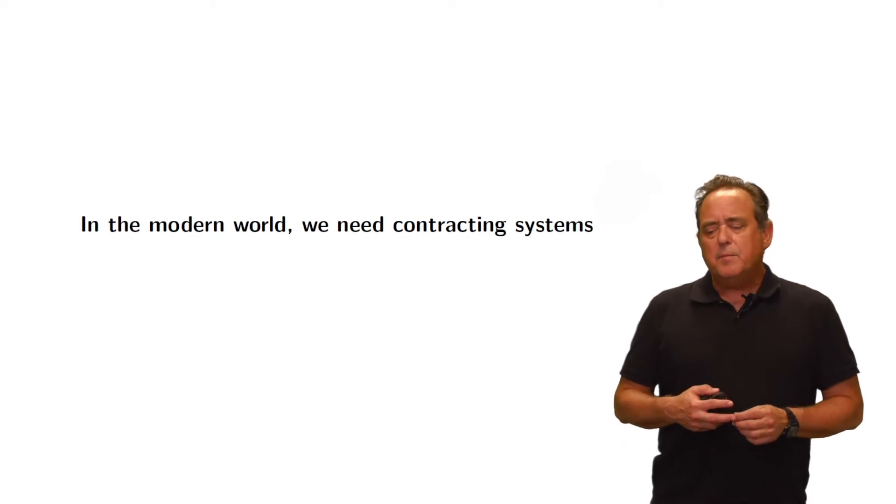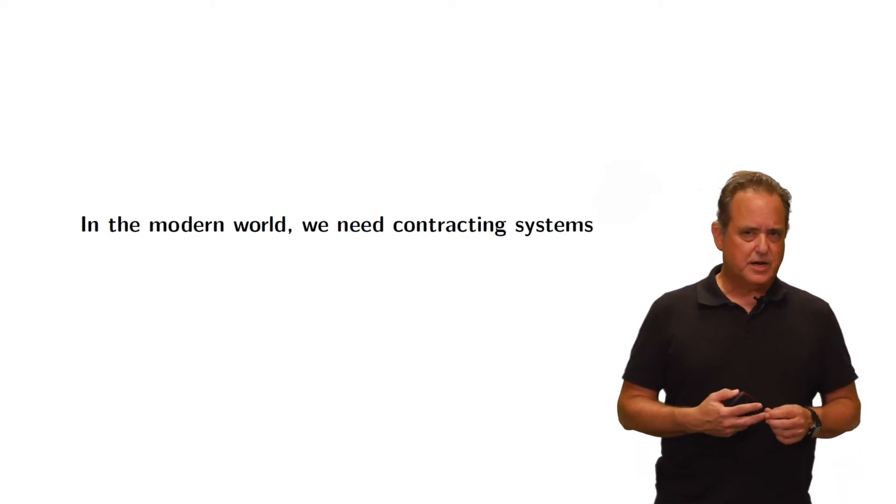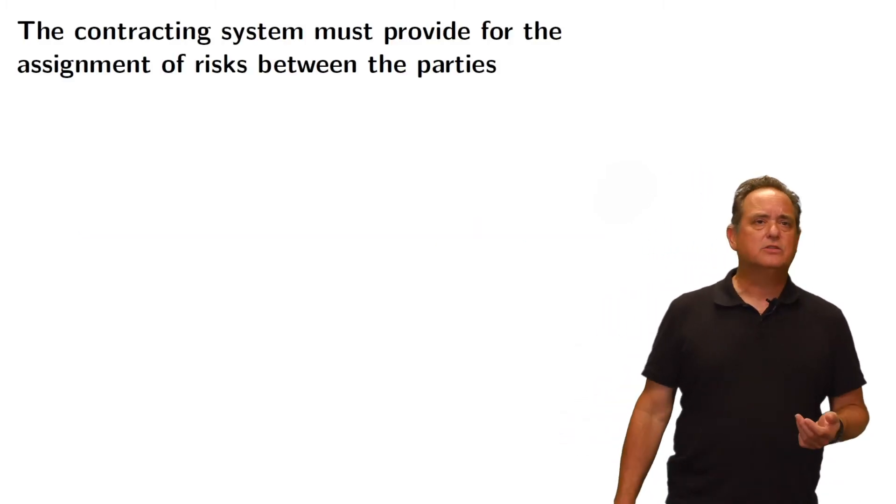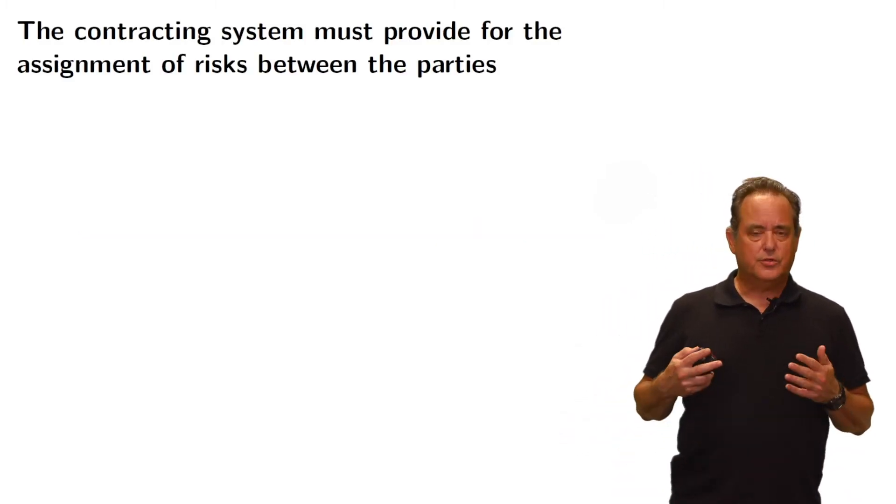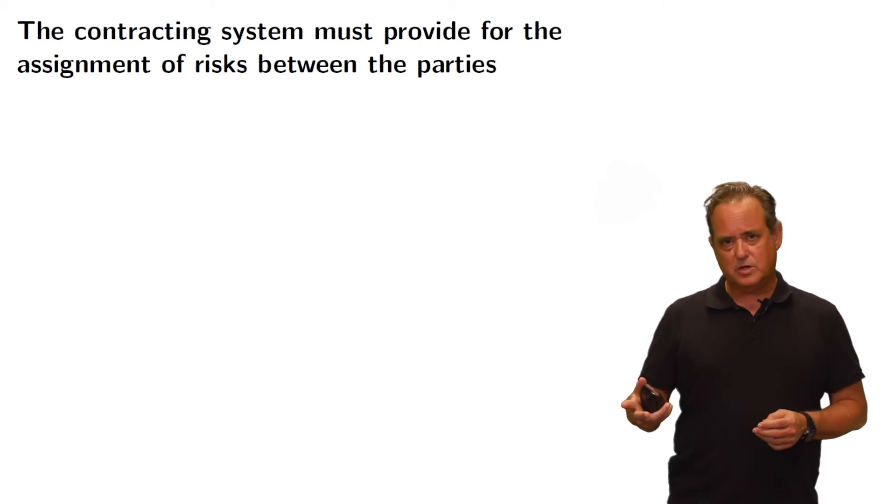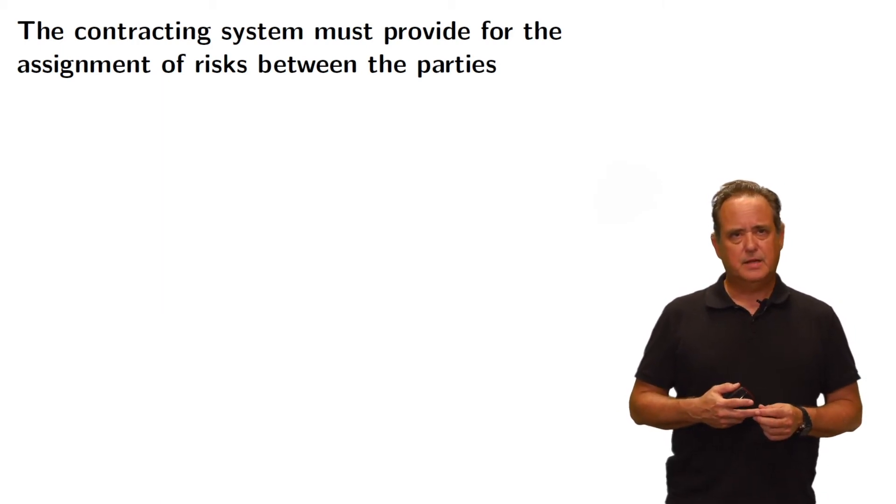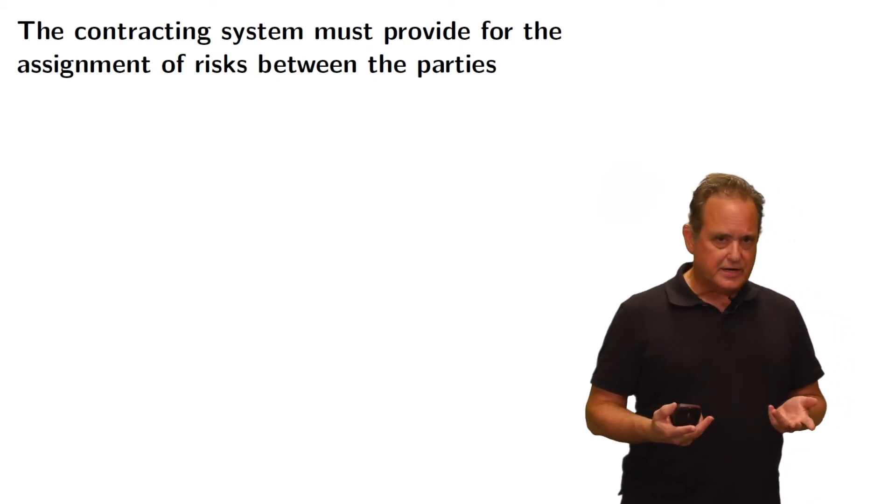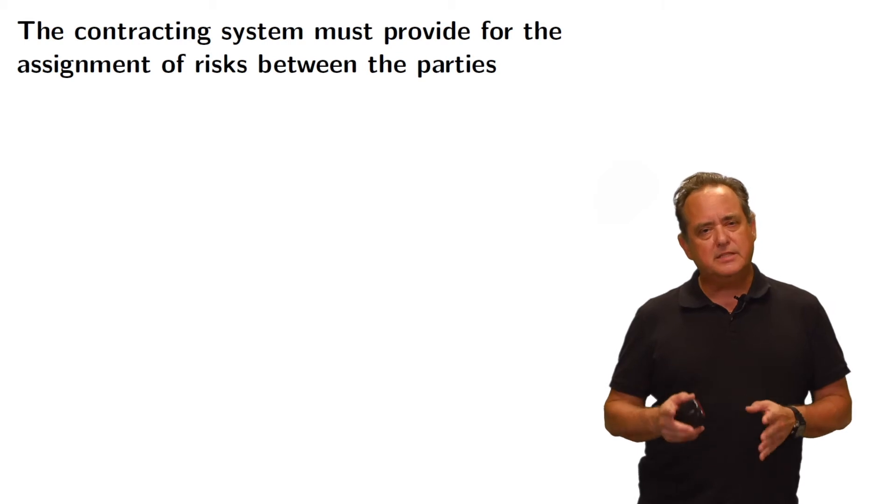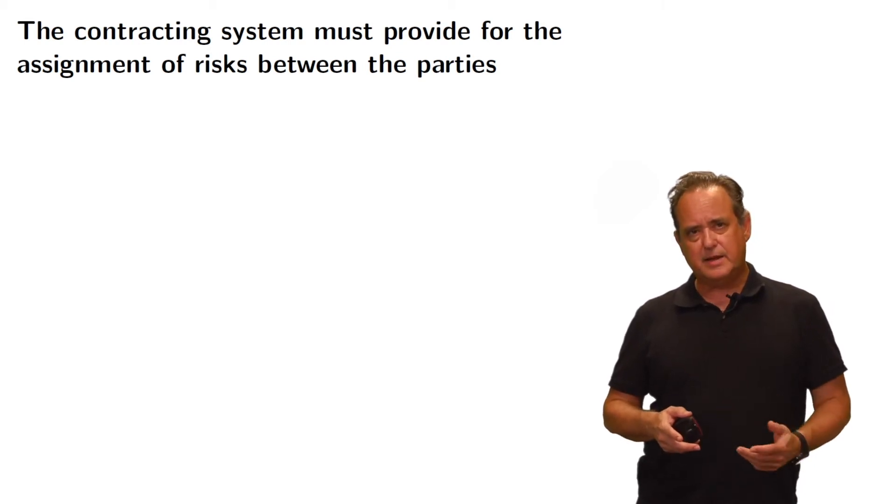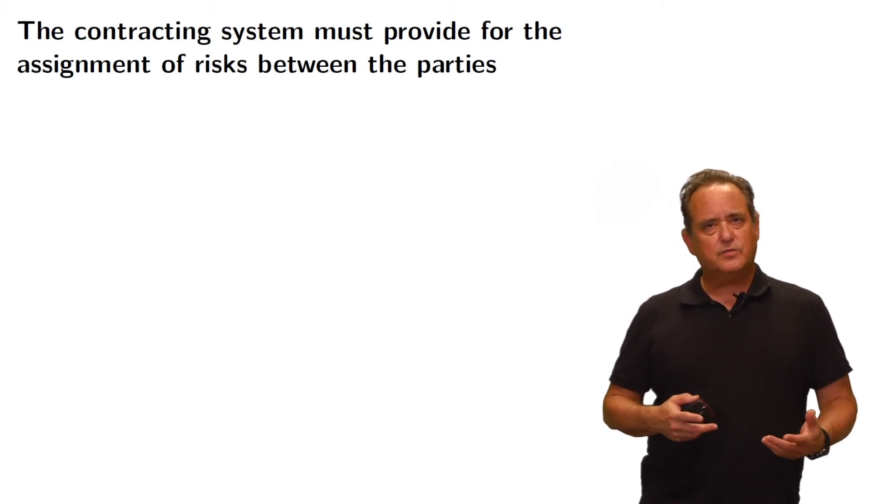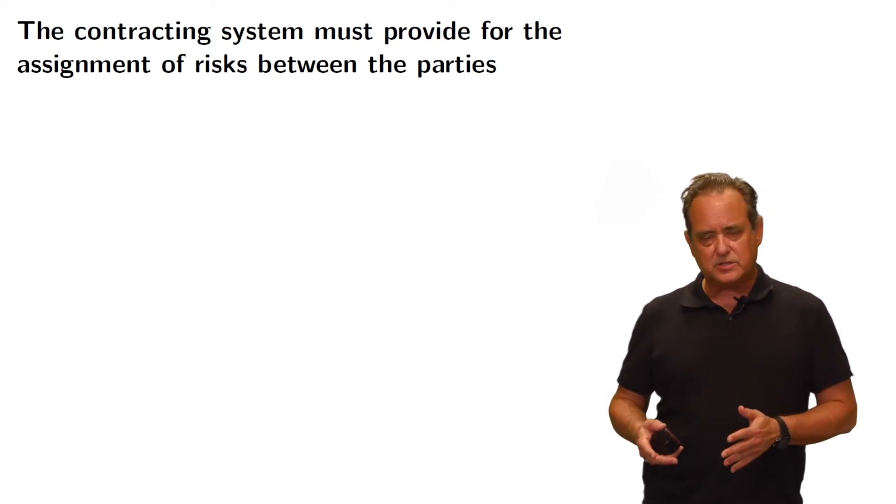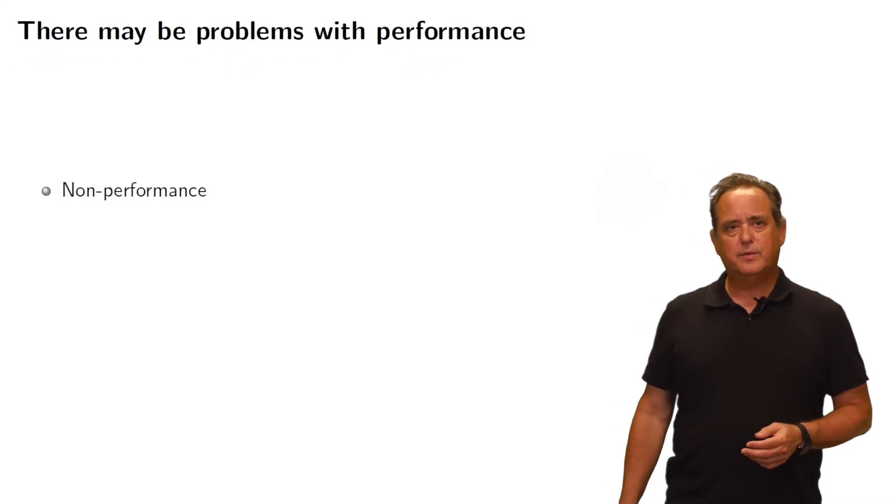Now in the modern world, we need contracting systems. And in fact, in the United States, we currently use three different contracting systems, which we'll talk about in this lecture. However, even though we use three different contracting systems, each contracting system does essentially the same thing. First of all, the contracting system has to provide for the assignment of risks between the parties.